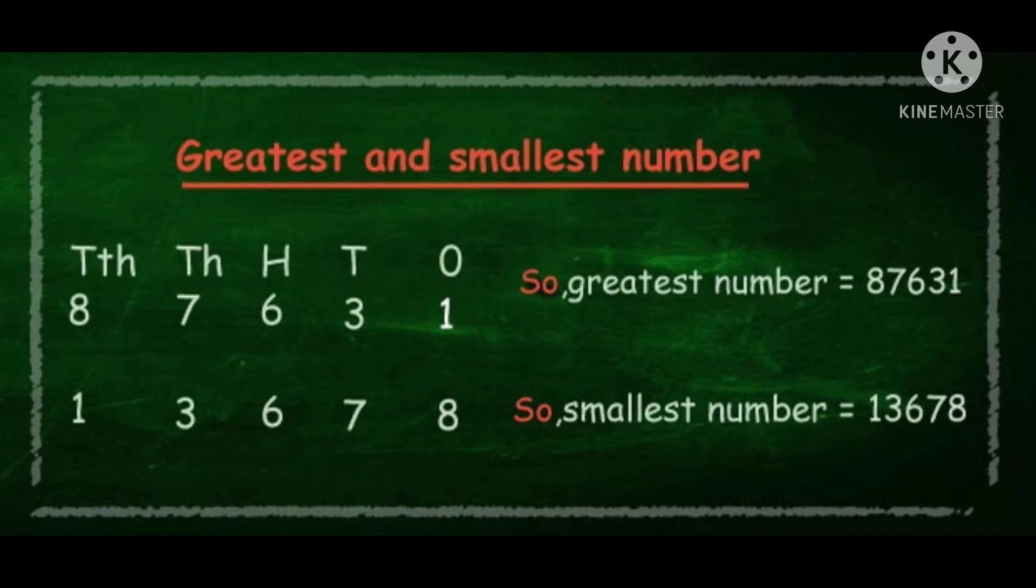So we are to make greatest number, so write the digits in descending form. We'll get 87,631. By using the same digits to make smallest number, we have to write the digits in ascending order. So ascending order is 1, 3, 6, 7, and 8, and the number will be 13,678.